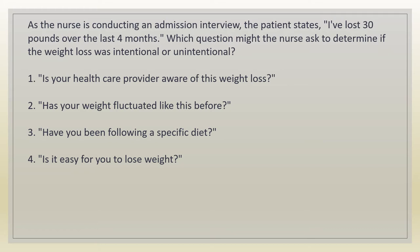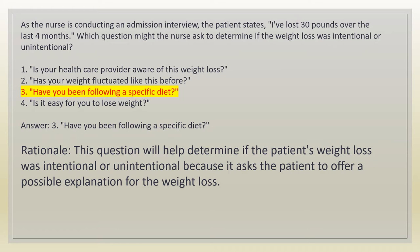As the nurse is conducting an admission interview, the patient states, 'I've lost 30 pounds over the last four months.' Which question might the nurse ask to determine if the weight loss was intentional or unintentional? 1. Is your health care provider aware of this weight loss? 2. Has your weight fluctuated like this before? 3. Have you been following a specific diet? 4. Is it easy for you to lose weight? Answer: 3. Have you been following a specific diet? Rationale: this question helps determine if the weight loss was intentional or unintentional because it asks the patient to offer a possible explanation.